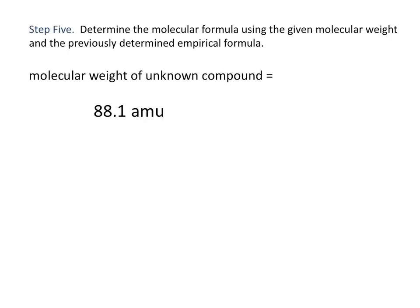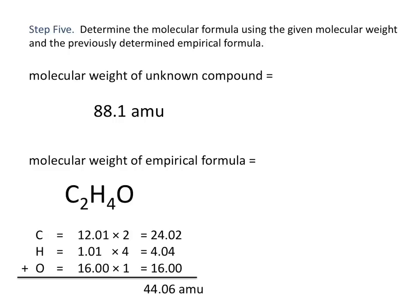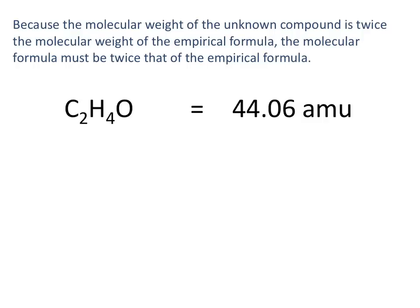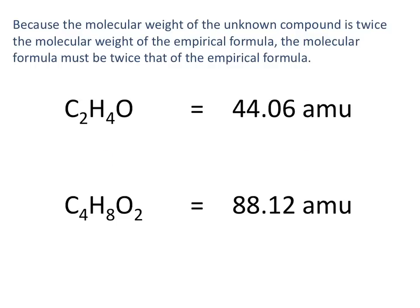If the molecular weight of our unknown compound is 88.1 AMU, we compare that to the molecular weight of the empirical formula. The empirical formula C2H4O has a molecular weight of 44.06 AMU. The molecular weight of the unknown is twice that of the empirical formula, so the molecular formula must be twice the empirical formula. Multiplying by 2 gives us the molecular formula C4H8O2.